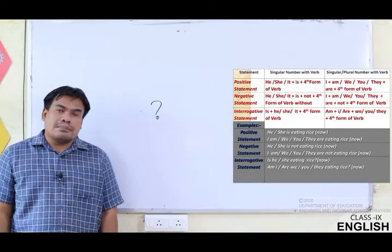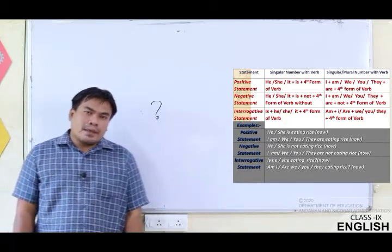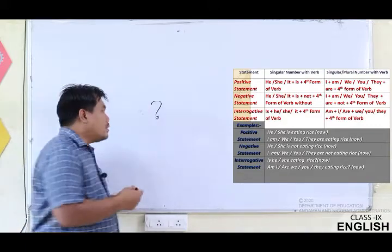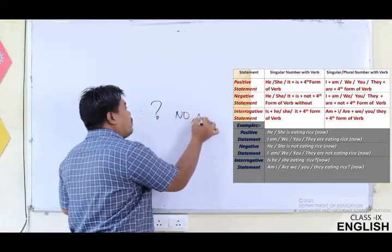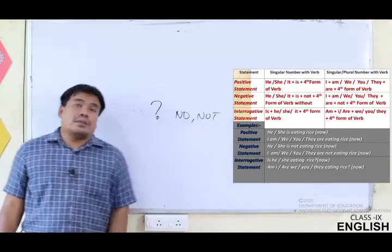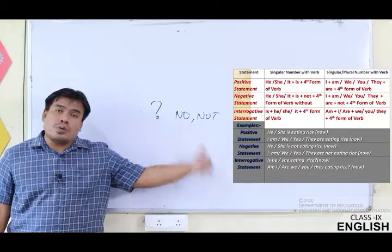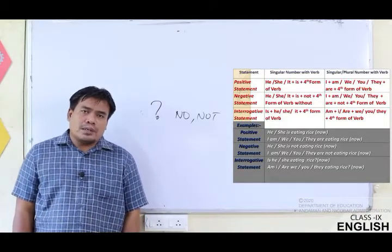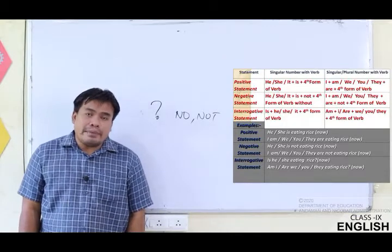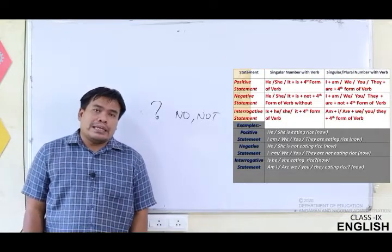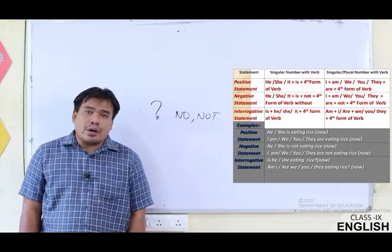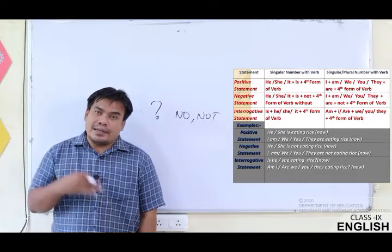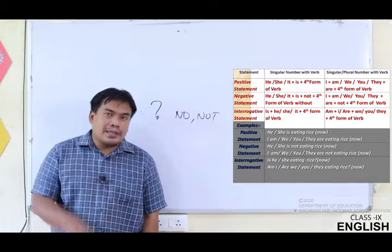For the negative statement: he, she, it plus 'is' plus 'not' — as I told you, whenever you are not sure of something, that is the negative statement, and you will be using 'no' or 'not.' And again with the fourth form of the verb. For I: I am not. For we, you, they: we are not, you are not, they are not — plus the fourth form, the present participle with -ing added.